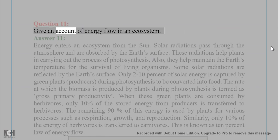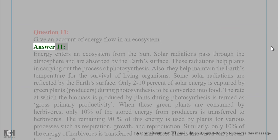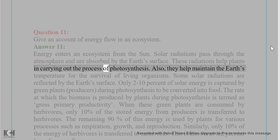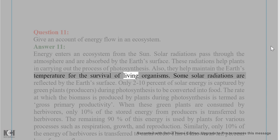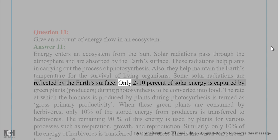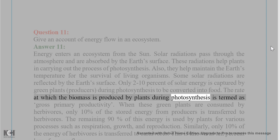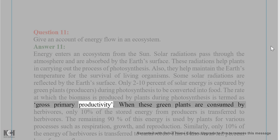Question 11: Give an account of energy flow in an ecosystem. Answer 11: Energy enters an ecosystem from the Sun. Solar radiations pass through the atmosphere and are absorbed by the earth's surface. These radiations help plants carry out photosynthesis and help maintain the earth's temperature for the survival of living organisms. Some solar radiations are reflected by the earth's surface. Only 2 to 10 percent of solar energy is captured by green plants (producers) during photosynthesis to be converted into food.